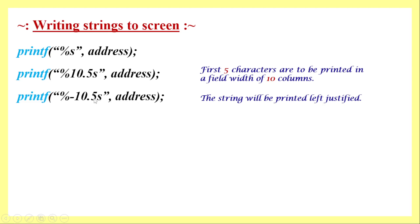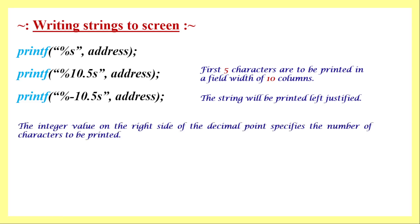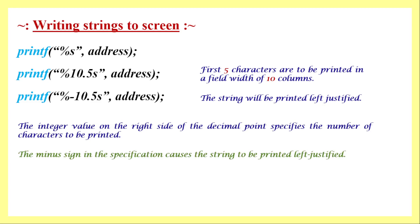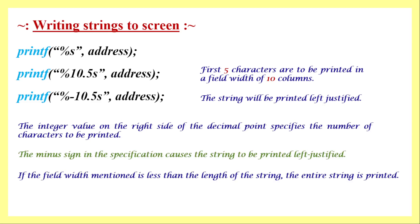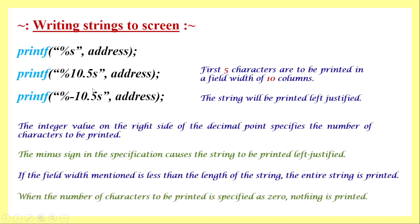With a negative sign, such as '%-10.5s', the first 5 characters will still be printed but left-justified. The integer value after the decimal point specifies the number of characters to be printed, and the minus sign specifies left justification. An important point: if the field width mentioned is less than the actual length of the string, the whole string will be printed regardless.